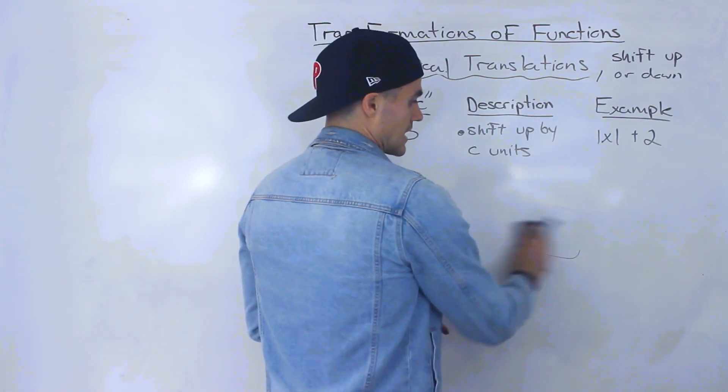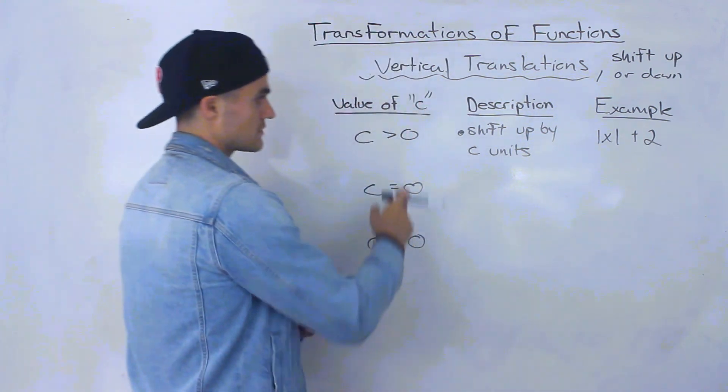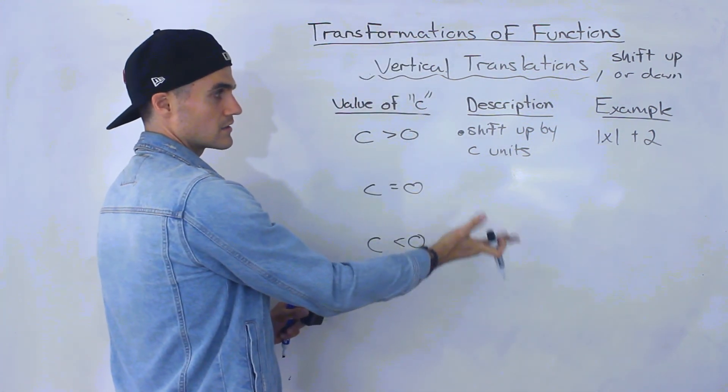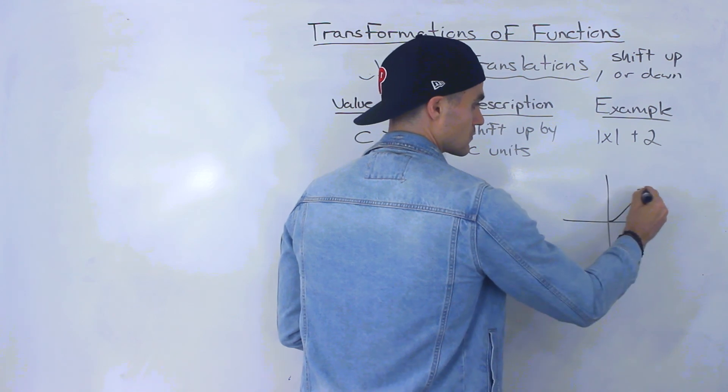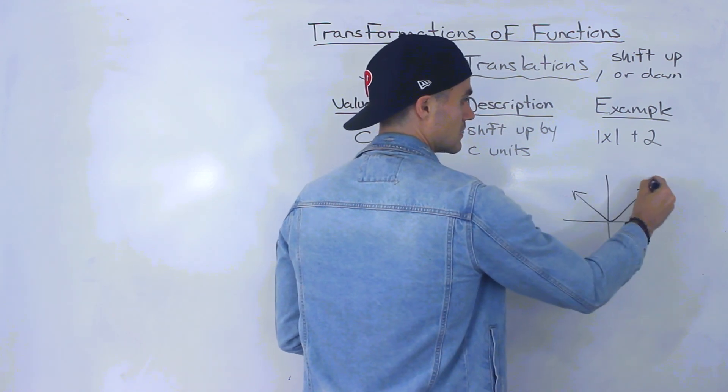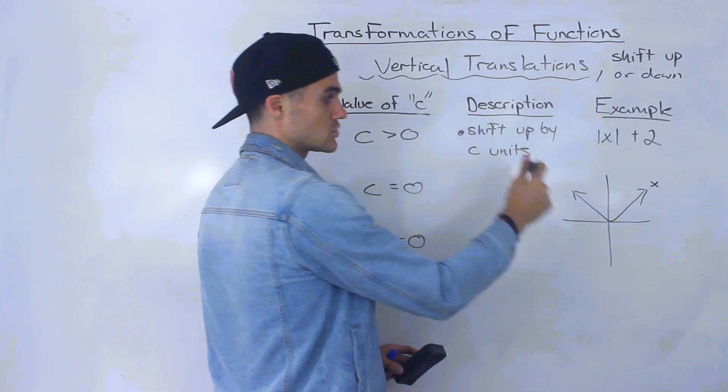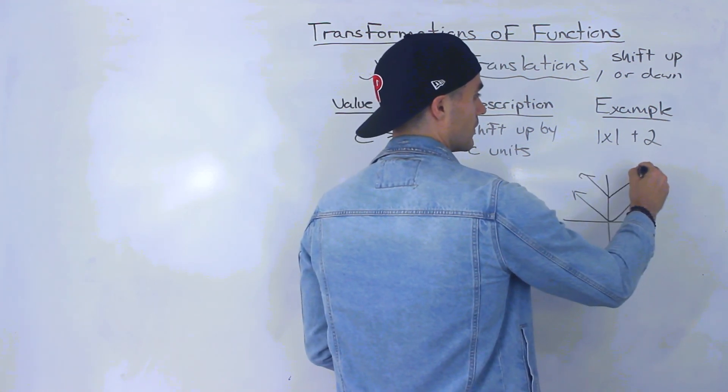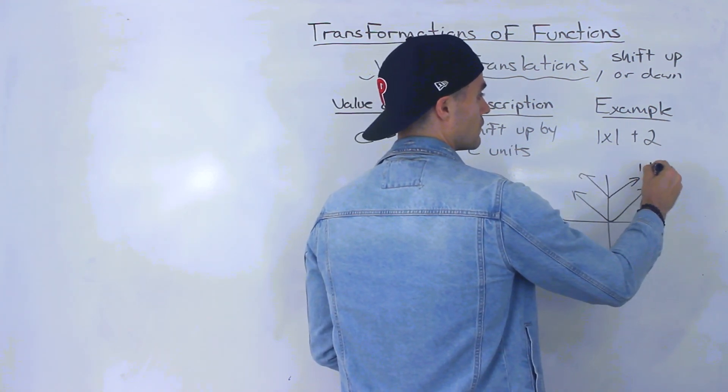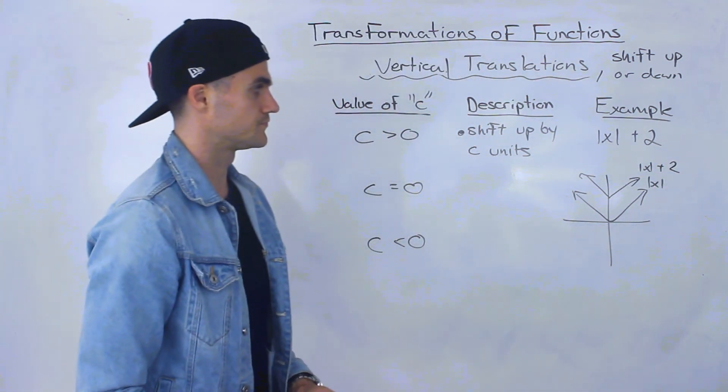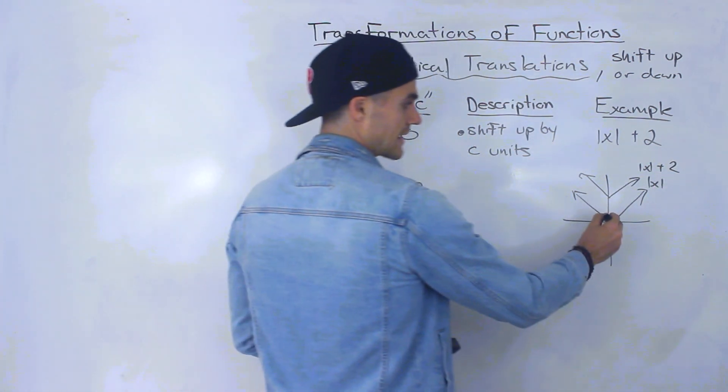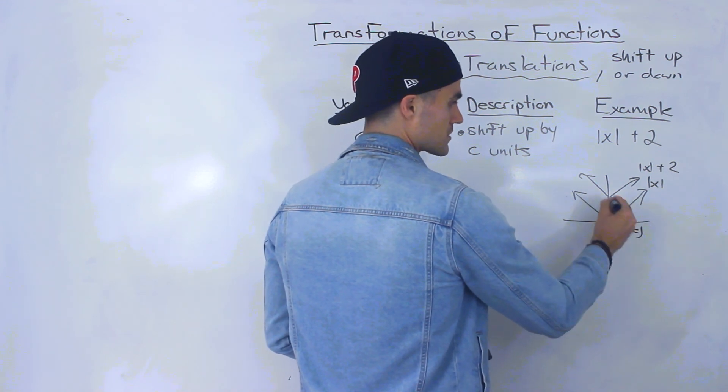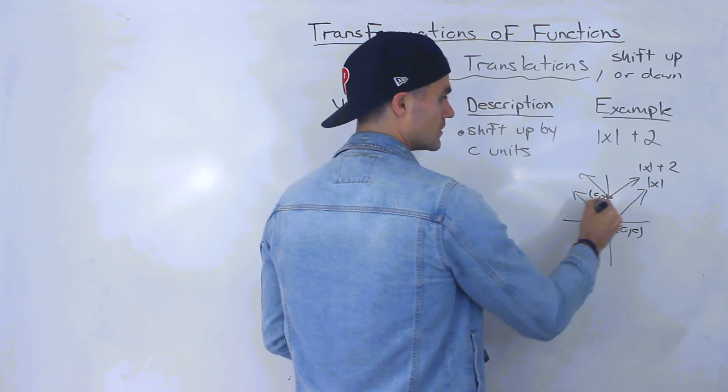Okay, so in this case, C value is positive two. So we're shifting it. We're shifting absolute value of X, which looks like this, up by two units. So now it would be up here. This would be the absolute value of X plus two. Right, so instead of at zero and zero, it would start at zero and two.